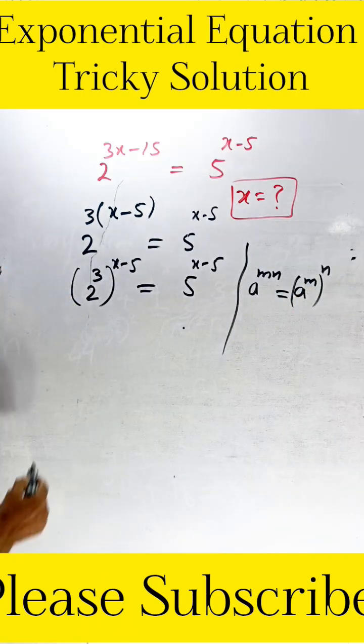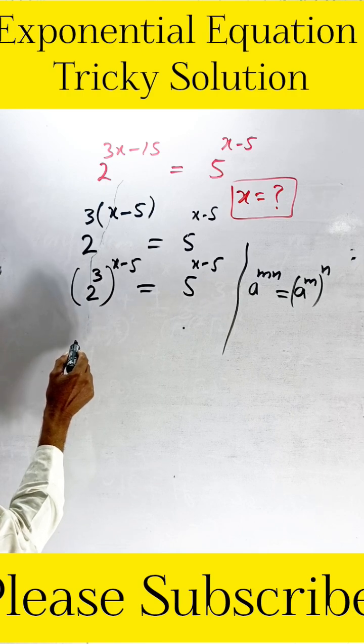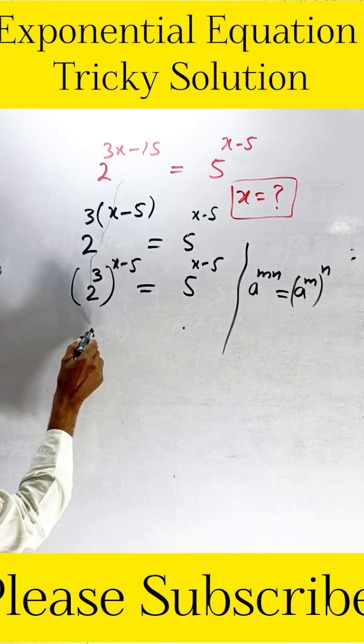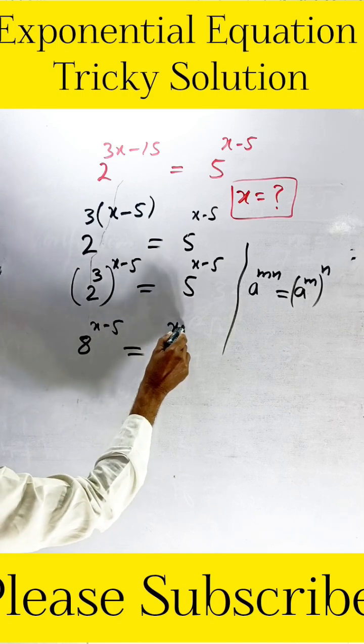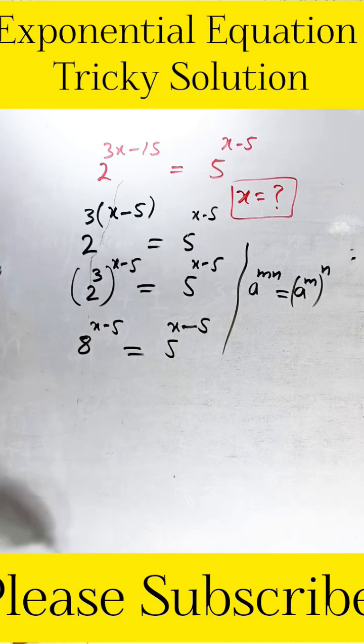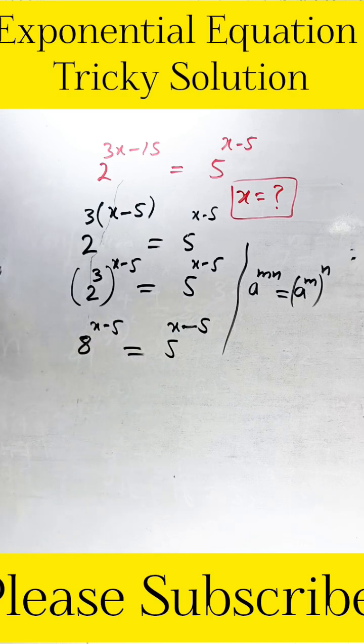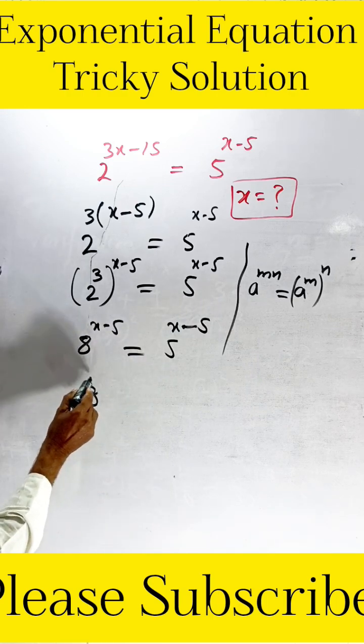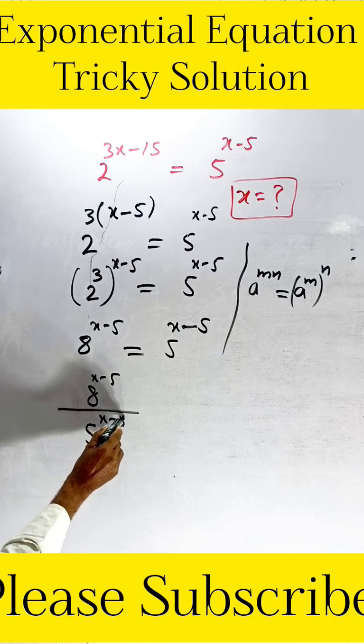We can write this term according to this condition. Here now we get 8 exponent of x minus 5 is equal to 5 exponent of x minus 5. Now dividing both sides by this term, that is your choice.